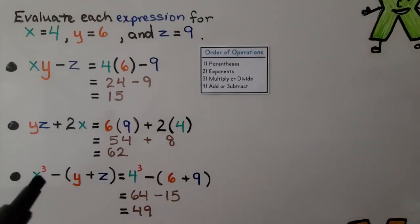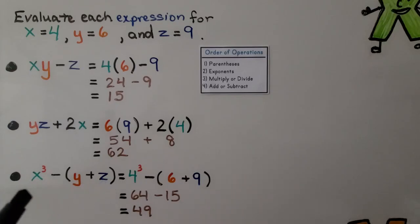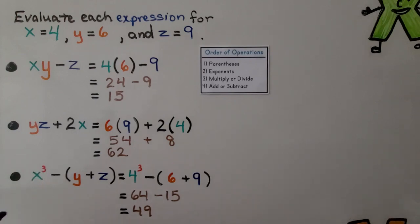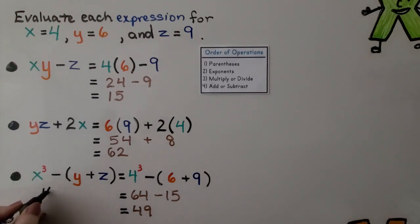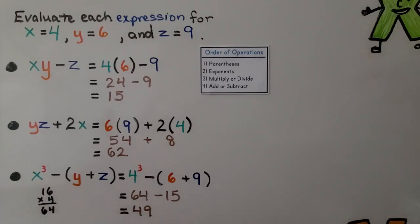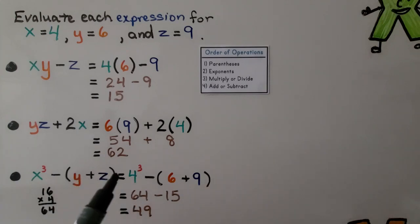For the third expression, x cubed minus y plus z, we substitute the values: 4 raised to the third power minus 6 plus 9. We calculate 4 cubed on the side: 4 times 4 is 16, and 16 times 4 is 64. Then we subtract 6 and add 9 — that's subtracting a net 15 — wait, 6 plus 9 is 15, and 64 minus 15 equals 49.